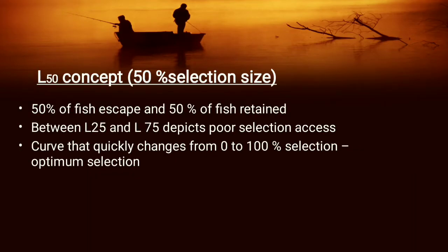The L-50 concept means that if we are catching some fishes, 50% of the fish should escape — for example from a trawl net or gill net — and the 50% which are of larger size are retained. We have to know L-25 and L-75; between L-75 minus L-25 around L-50 it depicts the selection excess. The main thing is the curve that quickly changes from 0 to 100% selection — that is optimum selection at L-50.